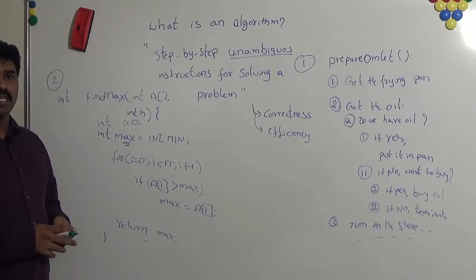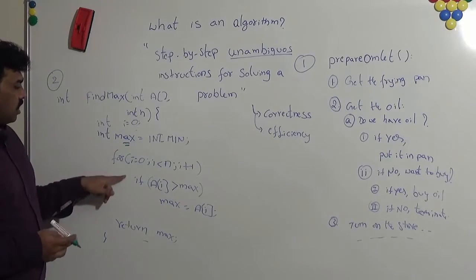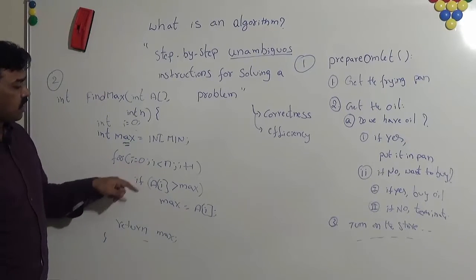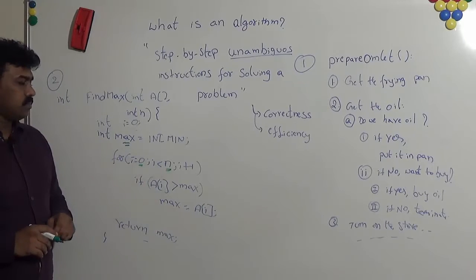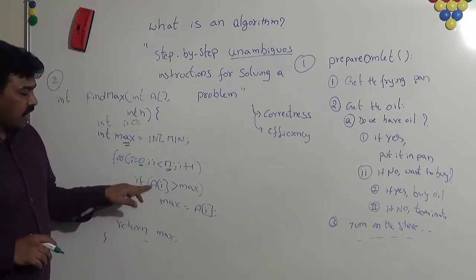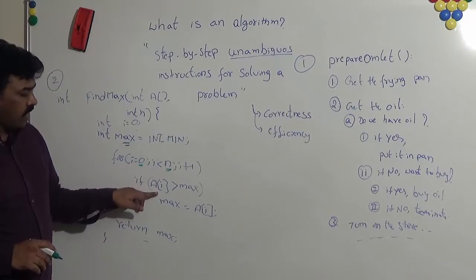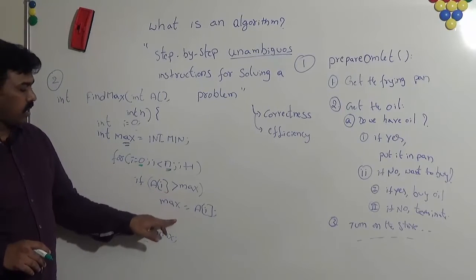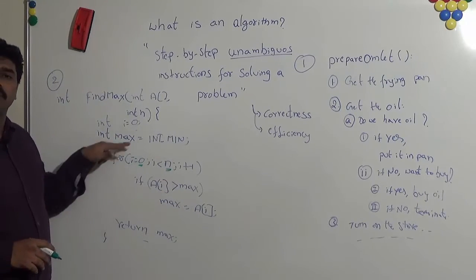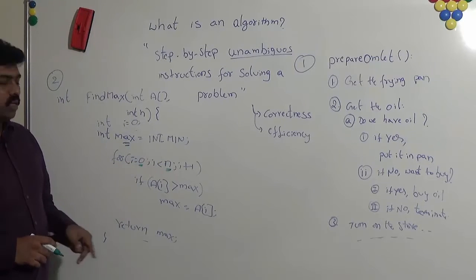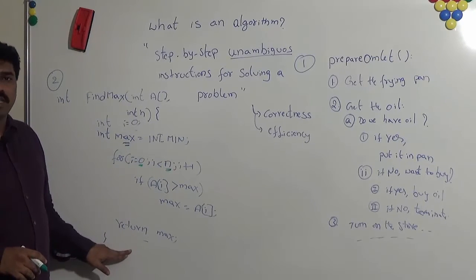Similarly, you can assume for other languages as well. And once the initialization is done, we are going through all the elements of the given array from 0 to n. And if the current value of the array is greater than the max element, we are updating the max element with the current value. And then we can do the same thing for all the elements of the given array. And at the end we are returning whatever is there in the max variable.